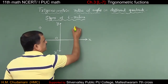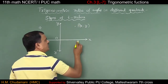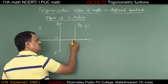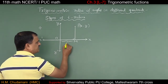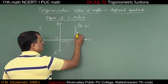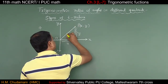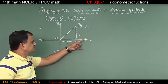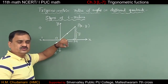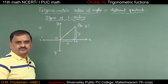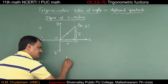In the first quadrant, take point P(x, y). Drop a perpendicular from P to the x-axis at M. OM equals x (positive x-axis) and PM equals y (positive y-axis). Since x and y are both positive in the first quadrant, all trigonometric functions are positive.